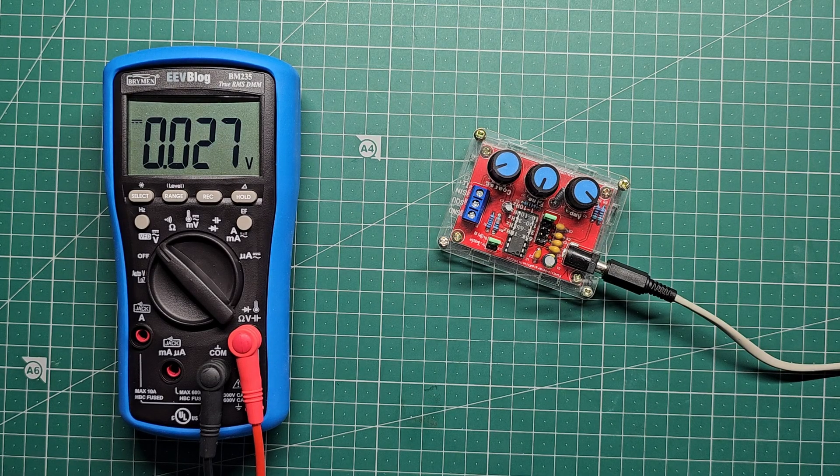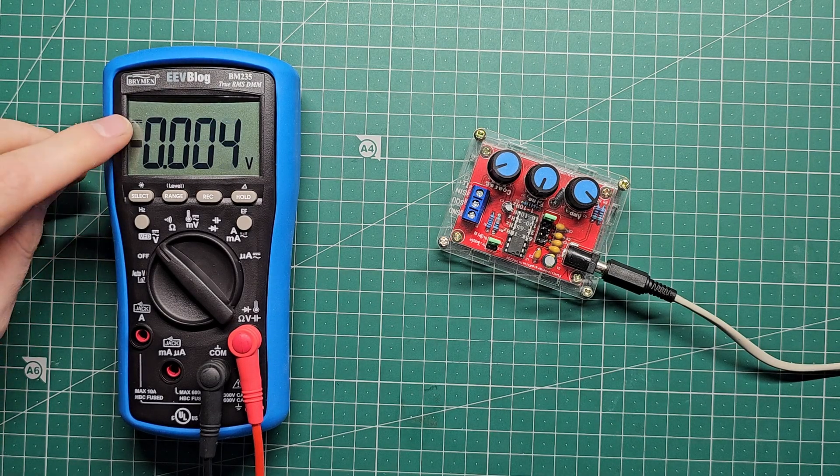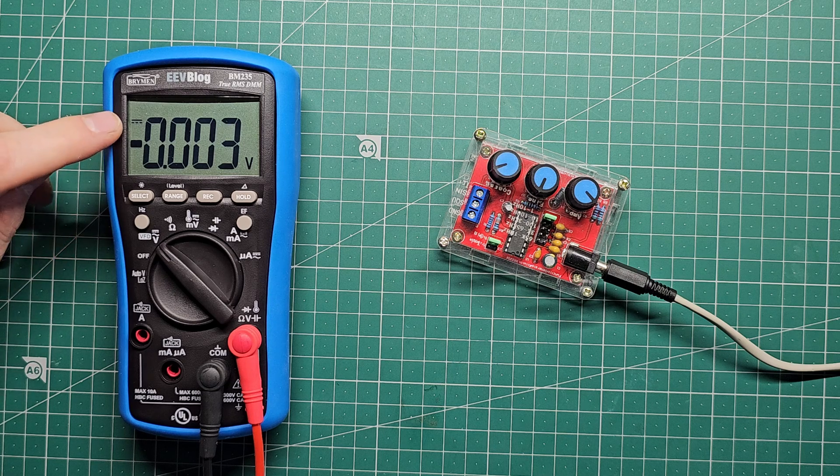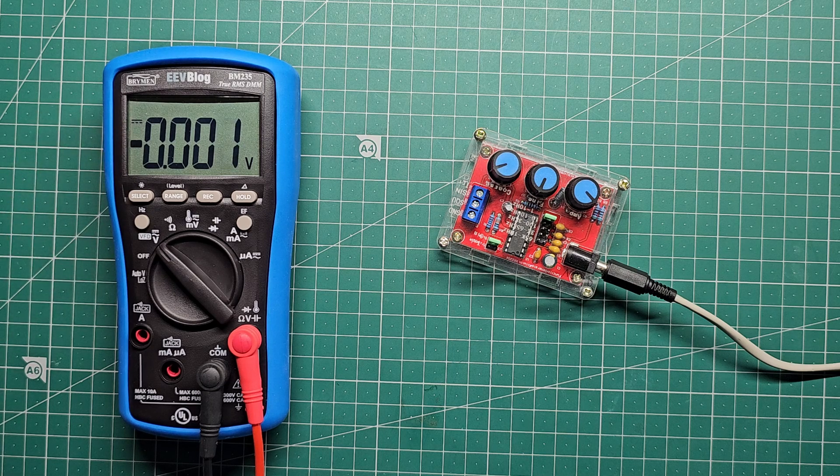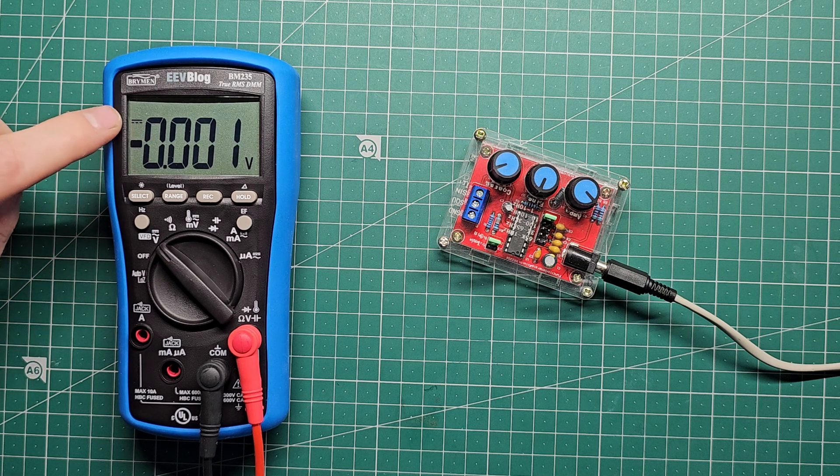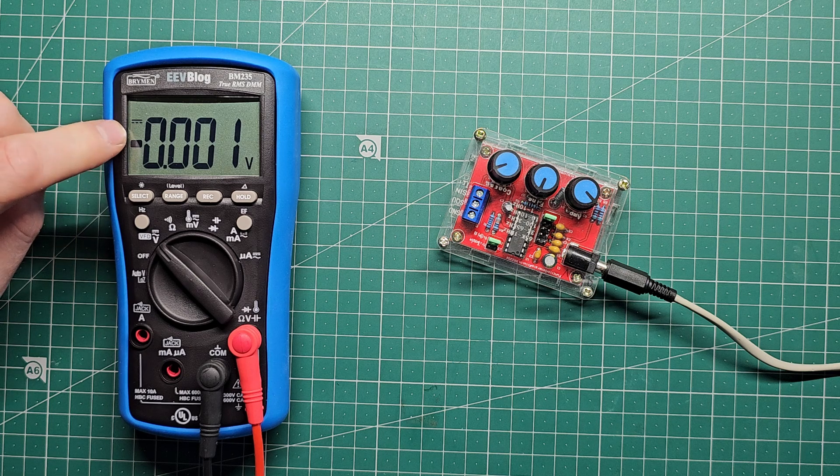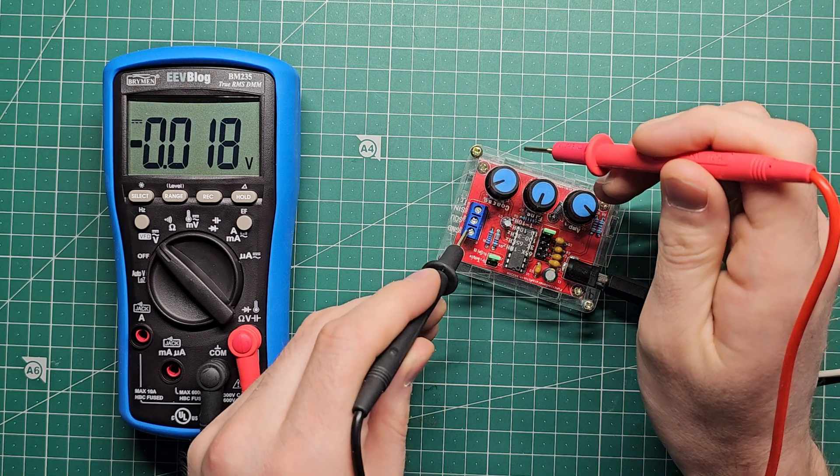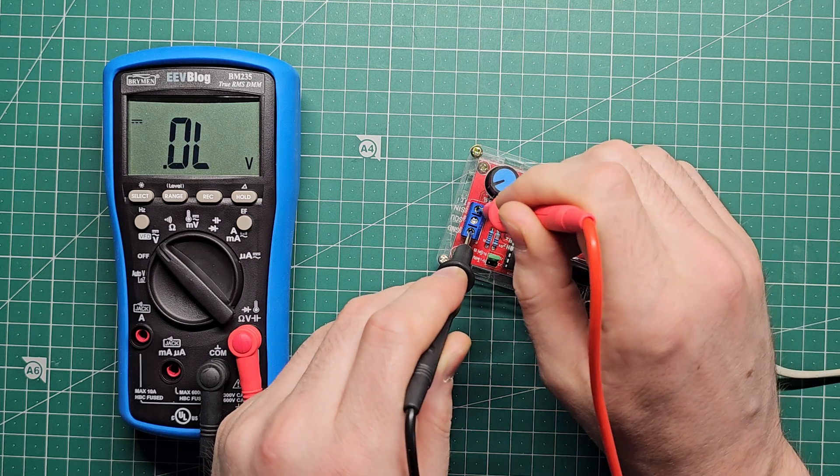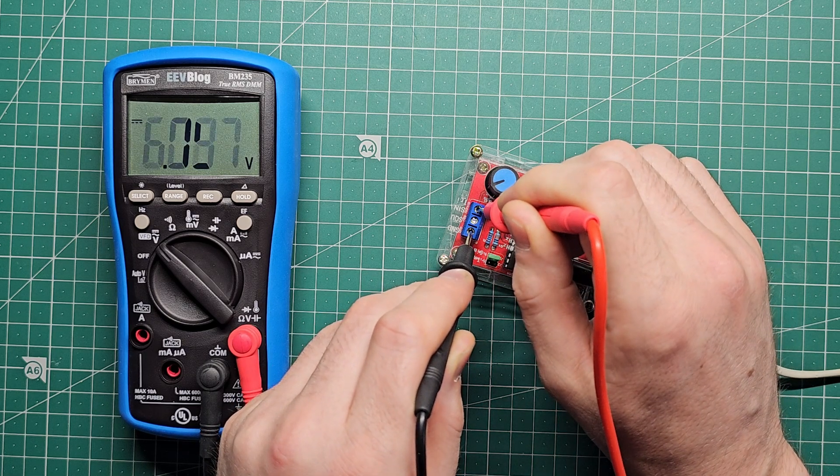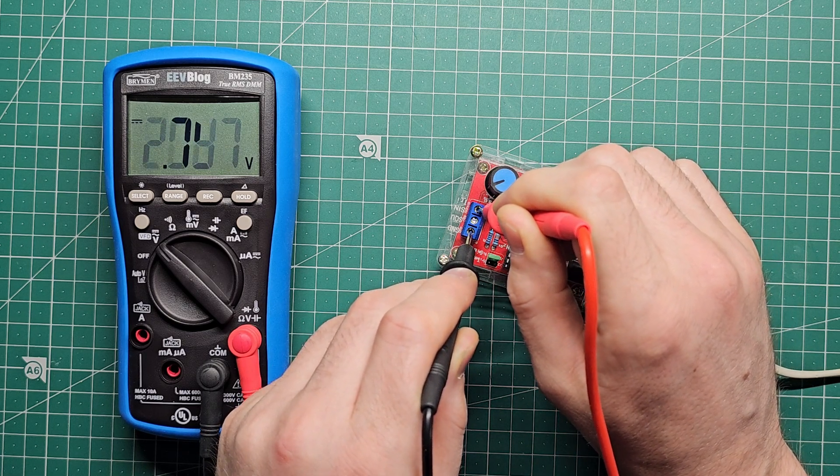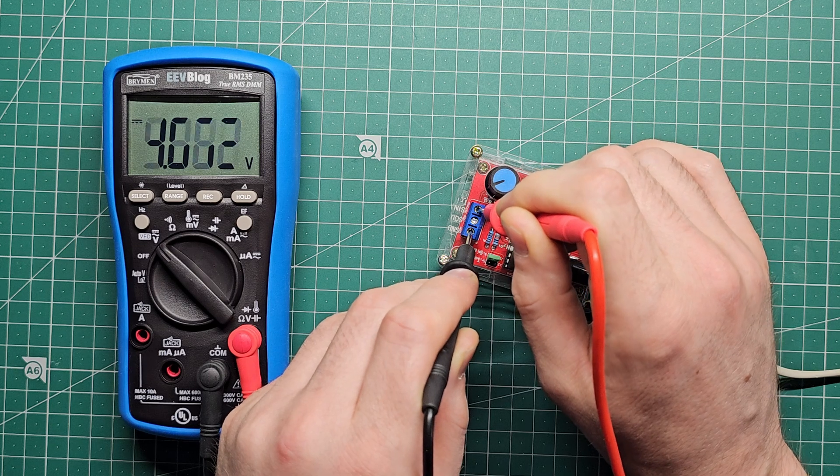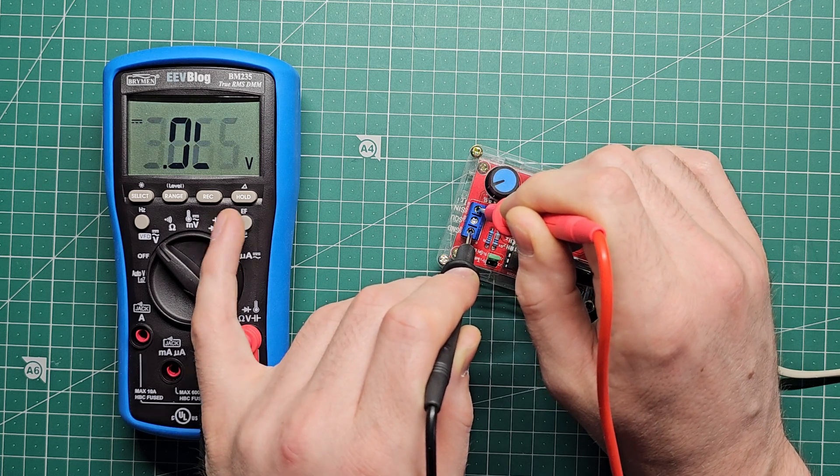Up until now we've been measuring stable DC voltages and we can see on the multimeter screen that there is a horizontal line with a couple of dashes beneath it. That means that you're measuring DC. But what happens if we try to measure something that's changing? Here's my signal generator that I built in a previous video. If I measure the output like this, you can see the multimeter goes a bit crazy. It's not sure what to do here because this is a changing voltage and it expects it to be stable.